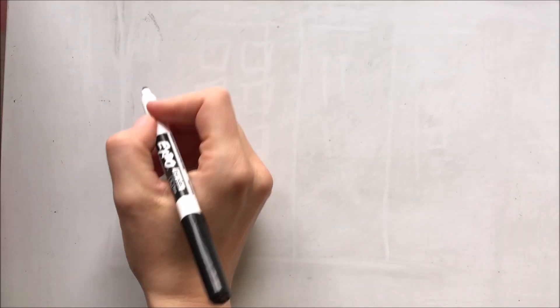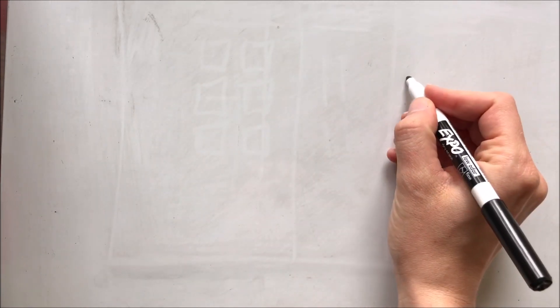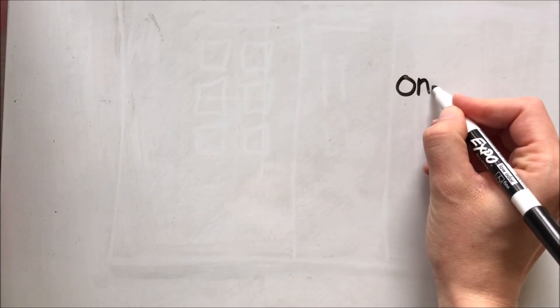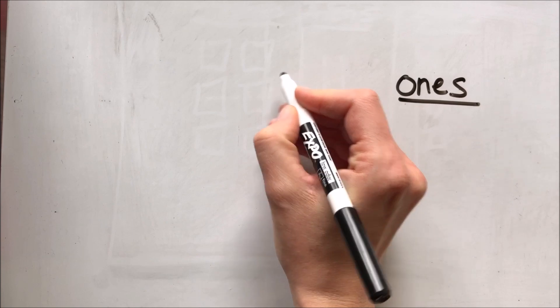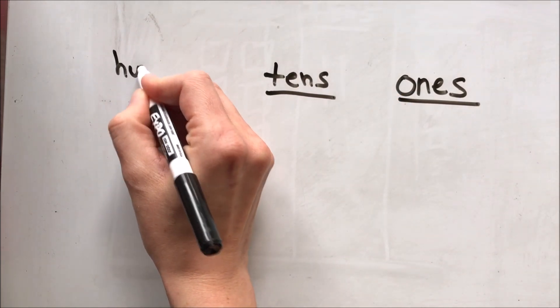Before we get started, a brief reminder about place value. When we're talking about numbers, the ones we are talking about today have a ones place, they have a tens place, and they're also going to have a hundreds place.